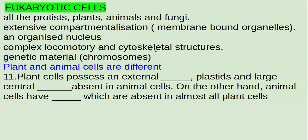Genetic material is inside the nucleus in the form of chromosomes, and chromosomes contain DNA and RNA. These are a few key points about eukaryotic cells. In the next lecture, we will be studying the details of each organelle, so this is just an introduction to eukaryotic cells.